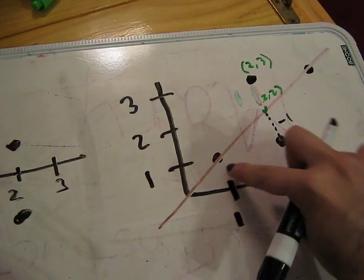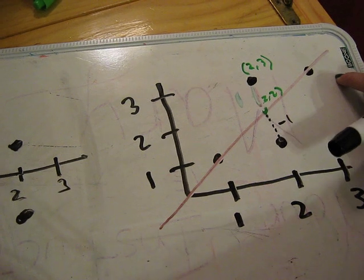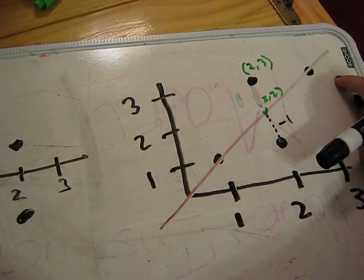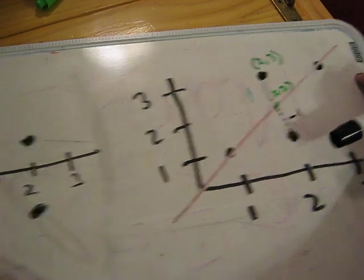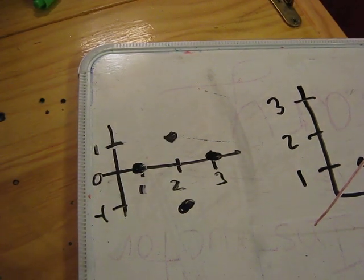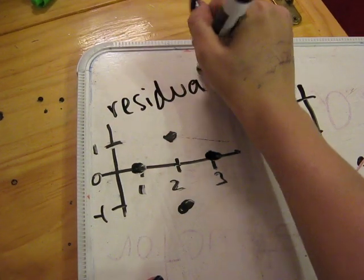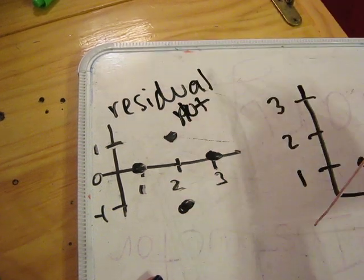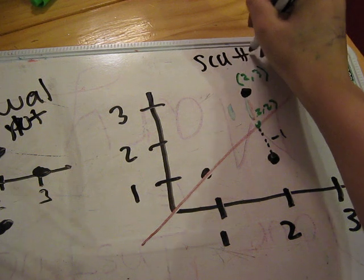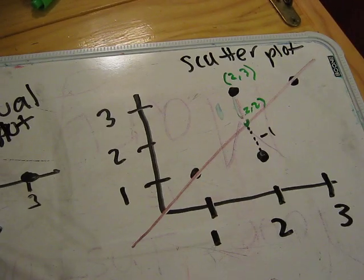And then because your 1 and your 3, your x of 1 and x of 3 are on the actual line, there's no distance between your actual value and your best fit value, and so it's going to be a regression of 0. So on your residual plot, it's going to be at 0. So this is where your residual plot comes from, your scatter plot. Does that make sense? That's where those numbers are coming from.